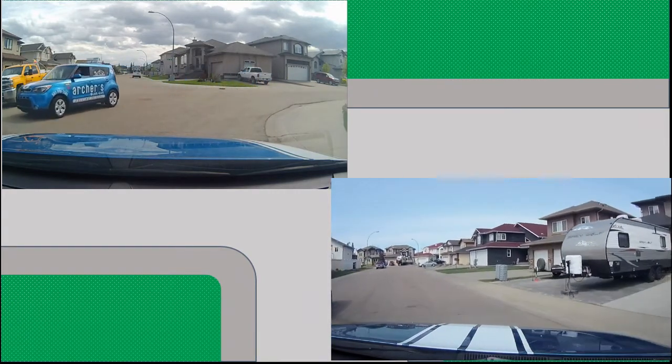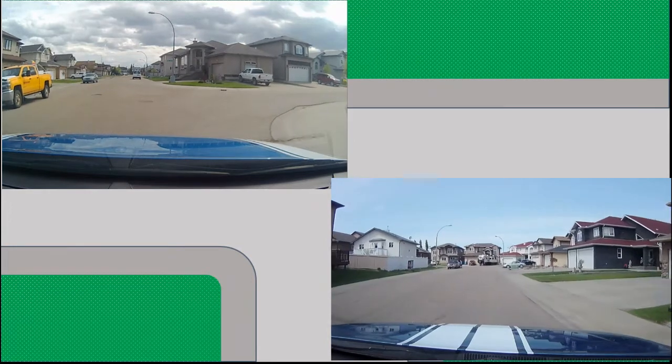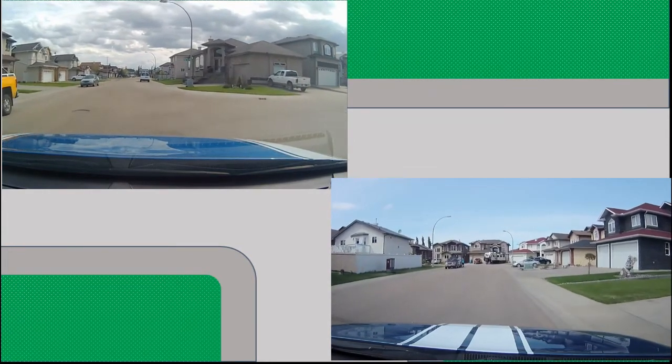As you can now see, the vehicle going straight is yielding to the vehicle that is on its right while the other vehicle is proceeding.